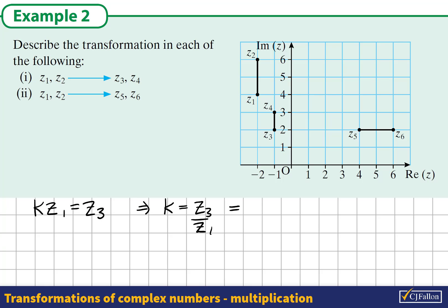Z3 we see is -1 + 2i. Z1 is -2 + 4i. We might notice that if we factorize the denominator here, factorize Z1, it can be written as 2 times (-1 + 2i). We notice that there is a common factor here. So dividing above and below by -1 + 2i, we can see that K is equal to a half.